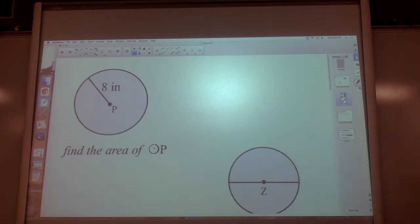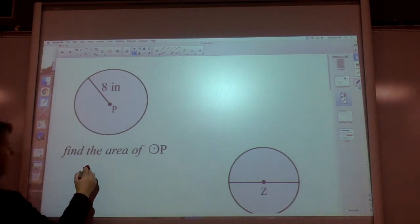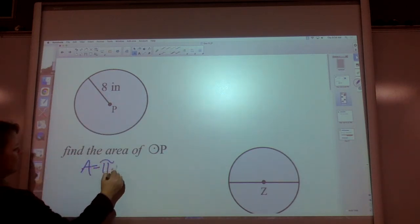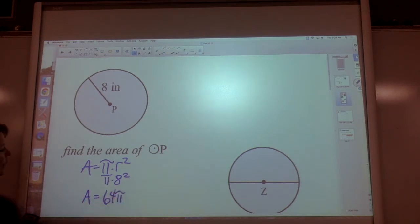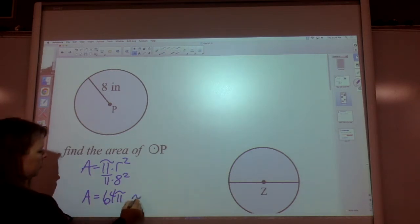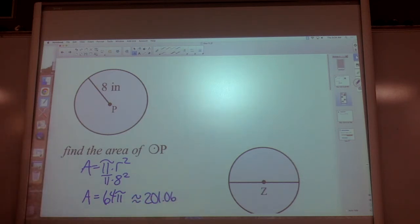We'll do five examples. First, they just want you to find the area of circle P. Circle P, find the area. Area equals π times radius squared. If we want an exact answer, we call it 64π, not π 64. If we want an approximate answer, we call it 201.06.